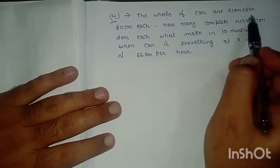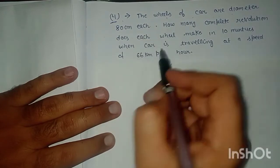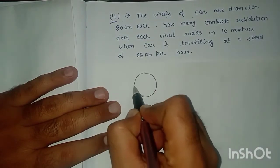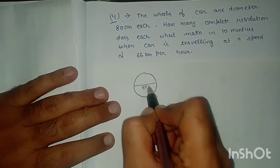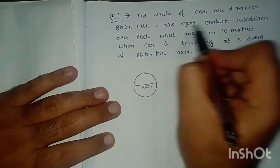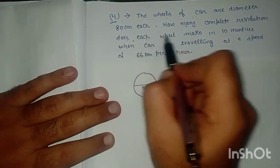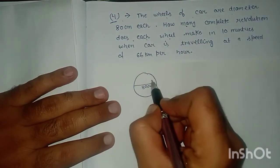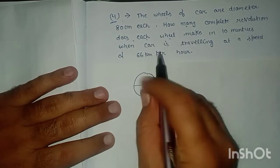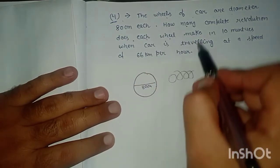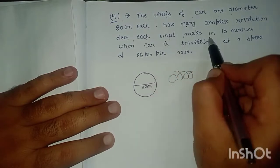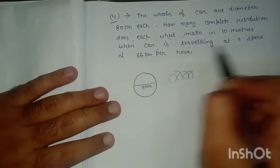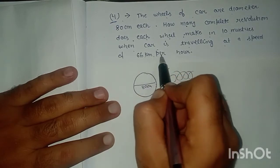The wheels of the car are diameter 80 cm each. How many complete revolutions does each wheel make in 10 minutes when the car is traveling at a speed of 66 km per hour?